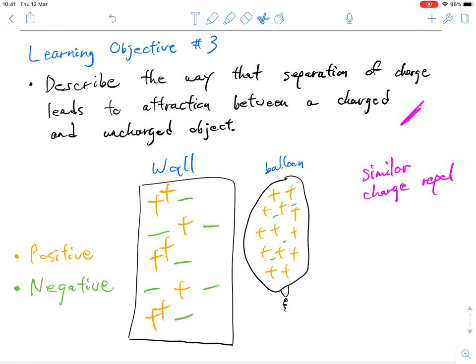Now, what happens next is remember that similar charges will repel. So what's going to happen is these positive charges are going to get thrown over here. They're going to get thrown over to this side.